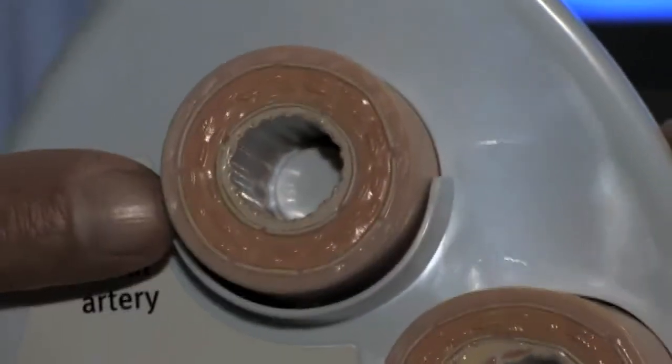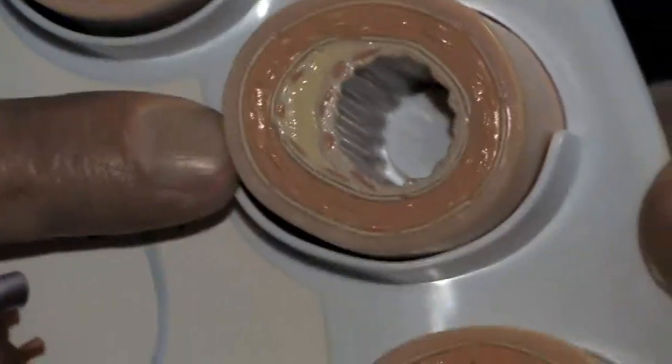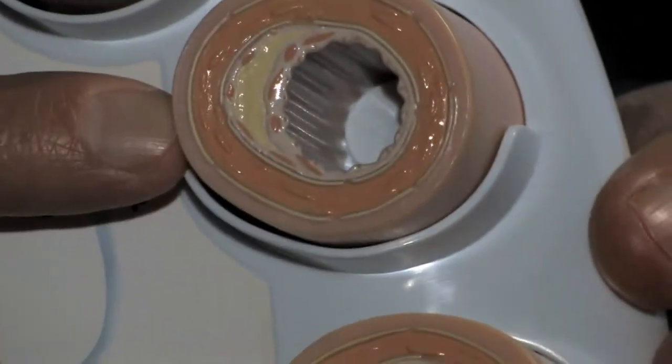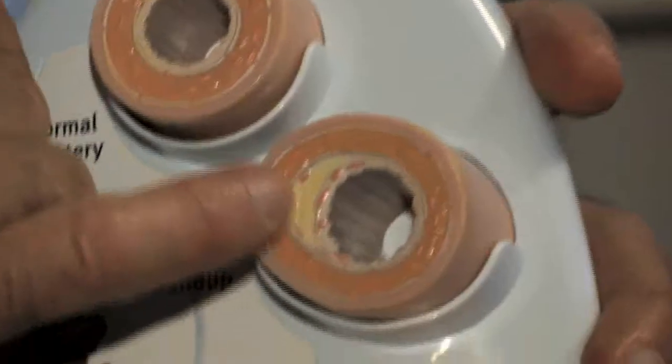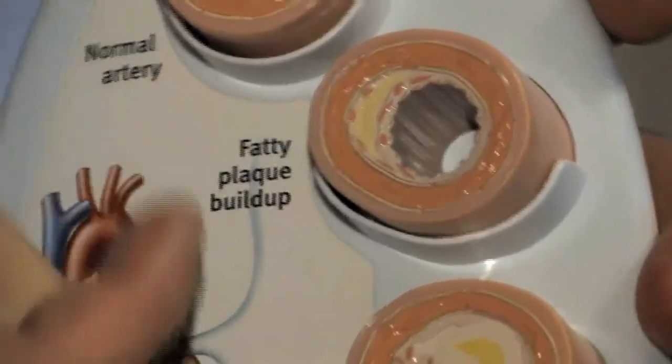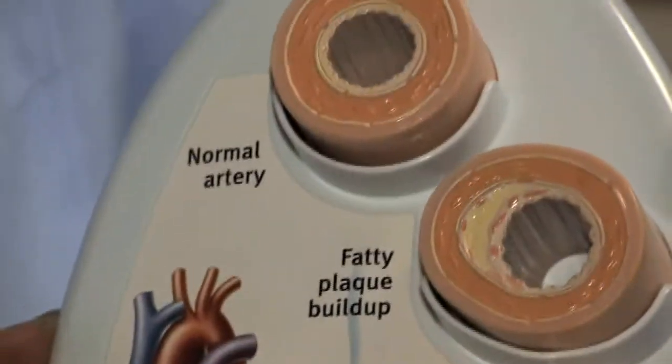This is a normal coronary artery. Then as we age and as we get exposed to more and more elevations in LDL cholesterol, the cholesterol deposits in the artery wall. And HDL is actually important for removing that cholesterol.